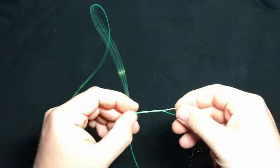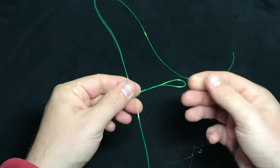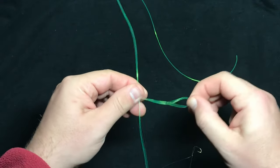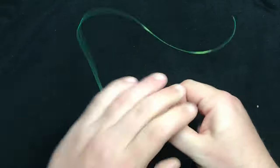And what this dropper loop does is it keeps the hook that's going to be on the other end of this away from your line from getting tangled up.